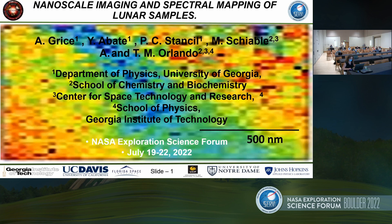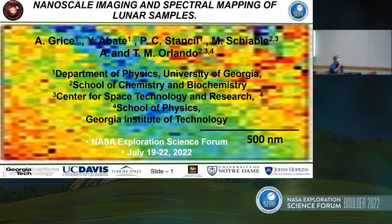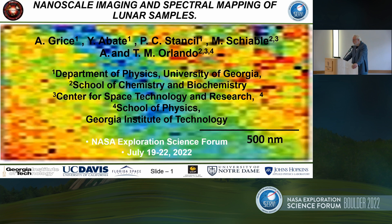I want to share a view on some of the work that we've been doing over the past year and a half. This is a fairly new activity for us. The work was done by Adam Grice, a graduate student at the University of Georgia. His thesis advisor is Johannes Abate, a world's expert in two-dimensional optically mapping two-dimensional van der Waals surfaces. Phil Stancho is a theorist, and Michael Scheibel and myself from Georgia Tech were also contributing.